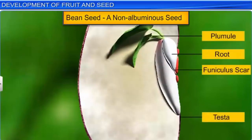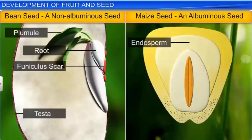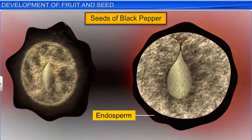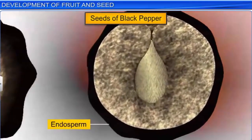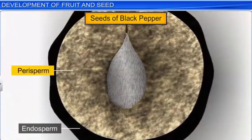In certain plants such as bean and pea, the developing embryo completely consumes the endosperm. Such seeds that contain no endosperm are called non-albuminous seeds. However, in wheat and maize, a residual endosperm is seen as it is not completely consumed by the embryo during the developmental stage — such seeds are called albuminous seeds. Sometimes, in addition to the endosperm, seeds also contain remnants of the nucellus called the perisperm, that also stores food material. Such seeds are called perispermic seeds, and black pepper is a common example.